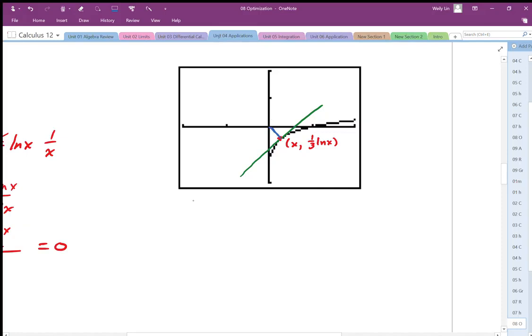That blue line, the slope of that blue line is going to be equal to the rise. In this case, it's going to be one-third log x over the run, which is x. It just happens to be rise and run from the zero, so there's my slope.